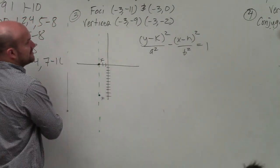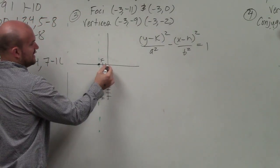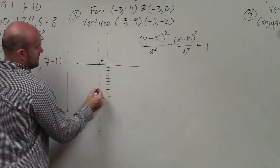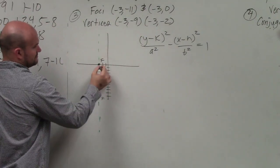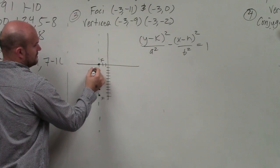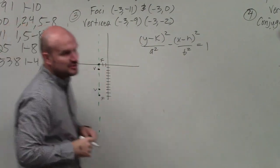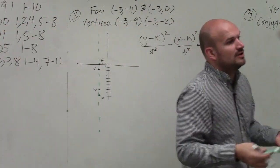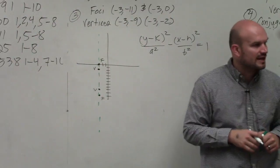Then, I can go and plot my two vertices, which are at negative 3, 9 and negative 3, 2. So I go ahead and label those as my two vertices. And remember, I know that they lie on my transverse axis, so that is correct.